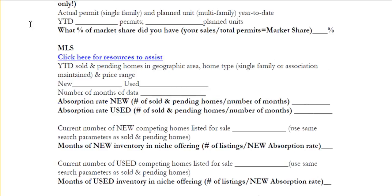Next is MLS, and this is for home builders only. We want to get our absorption numbers — we want to know what our absorption rate is for new and used homes. So we're going to go back into the MLS and look at sold and pending homes in the geographic area or areas you build, the home type — single family or association maintained — and the price range, your breadth of offering low to high. How many new homes sold and how many used homes sold? Then go back and look at how many months of data you have, whether it's 10 or 12 months — just make a notation of it.